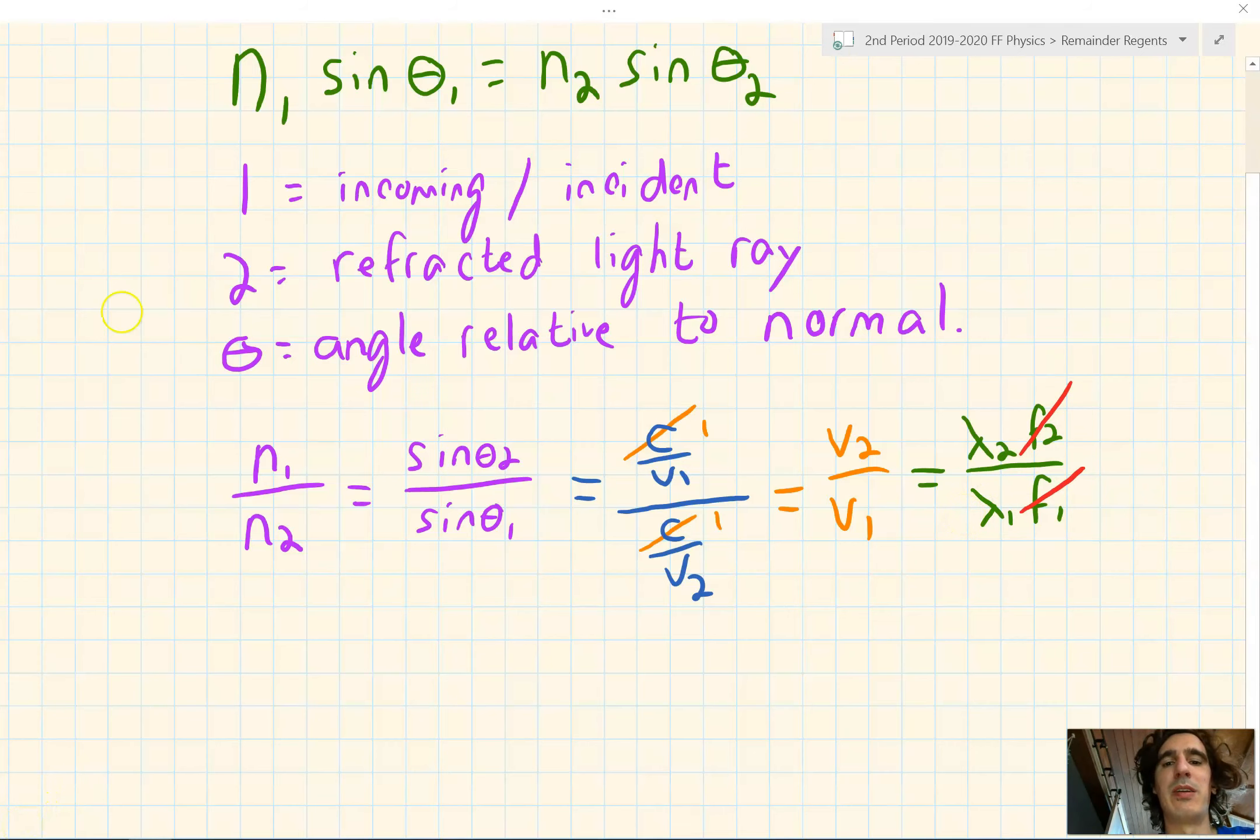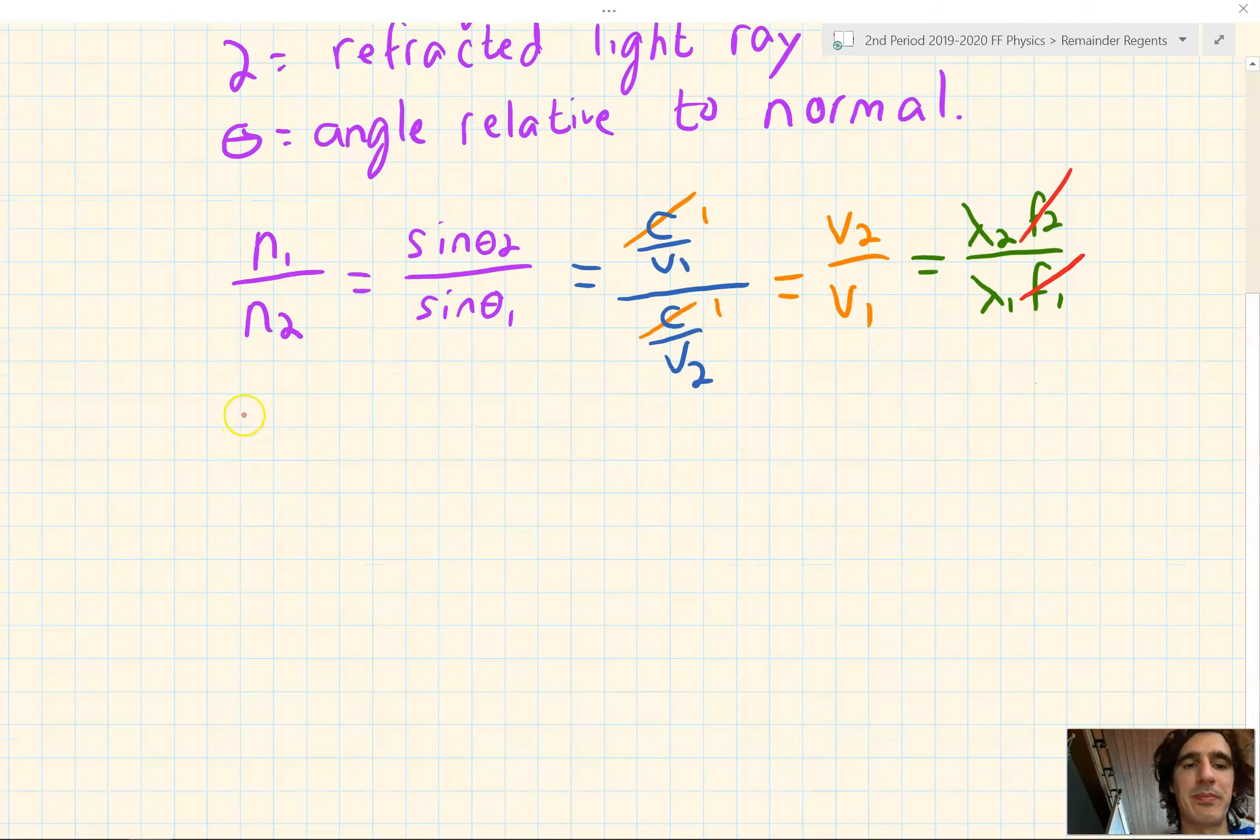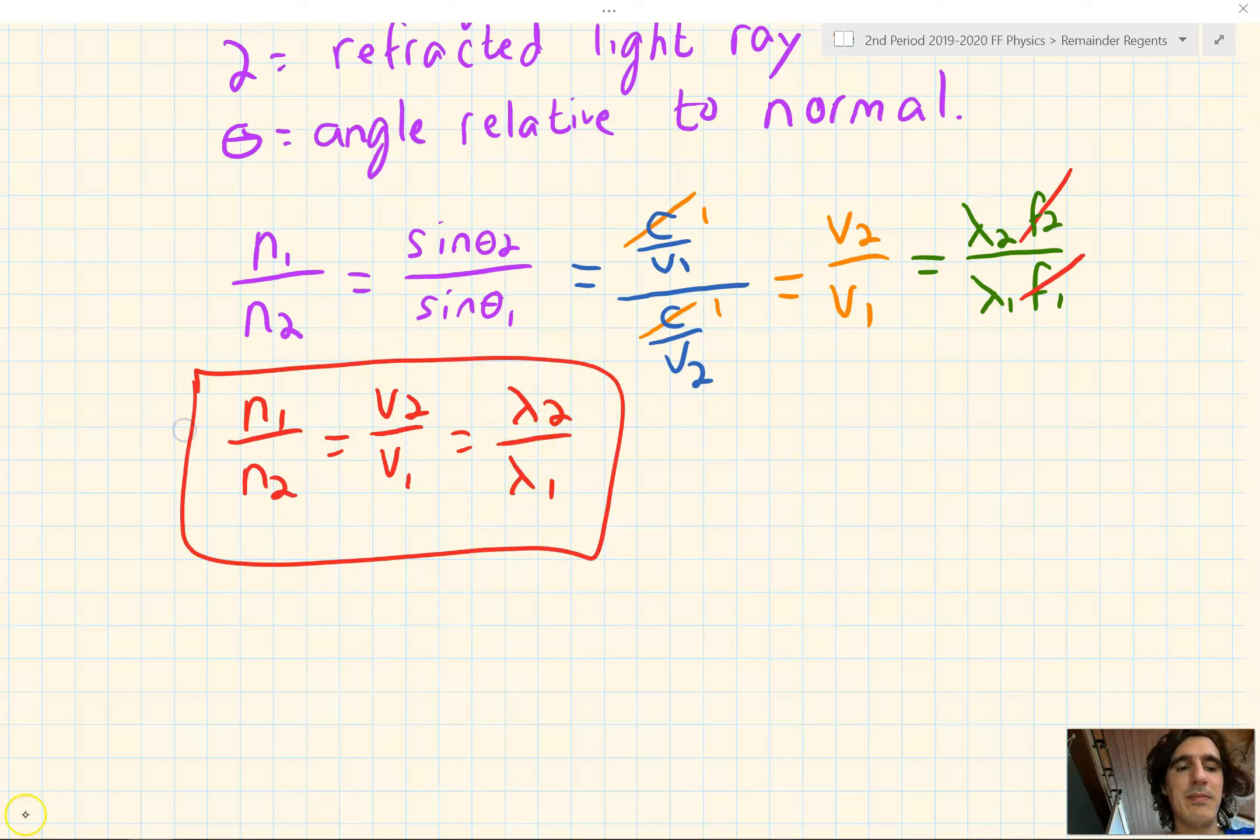If we were to put this in one clean formula, we can say that n₁ over n₂ is equal to v₂ over v₁, which equals lambda₂ over lambda₁. Let's do a couple of practice problems together.